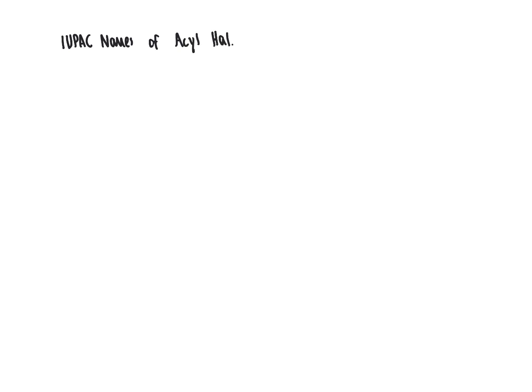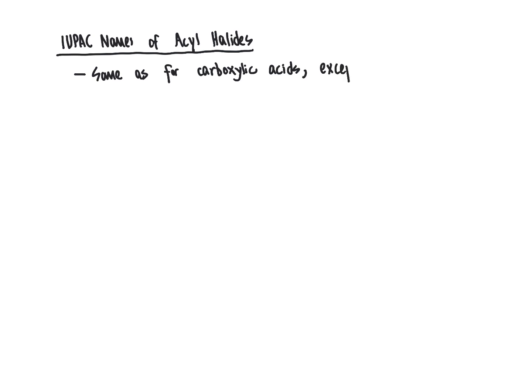We're going to base our discussion of IUPAC nomenclature of acyl halides on what we learned previously about naming carboxylic acids. The rules here are the same as for carboxylic acids — there's a whole video on naming carboxylic acids in the last module. The same rules apply, except that we need to designate the parent as the acyl halide chain rather than the carboxylic acid chain.